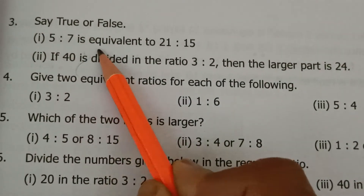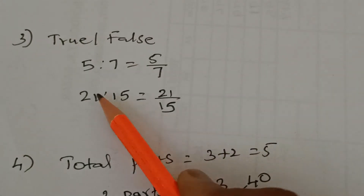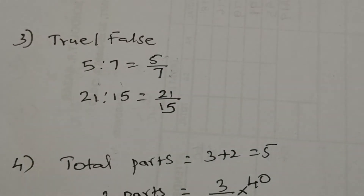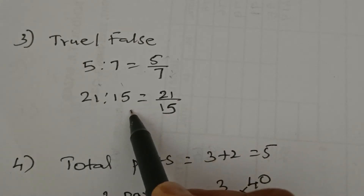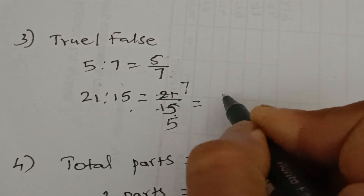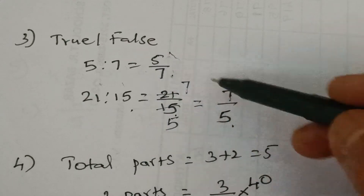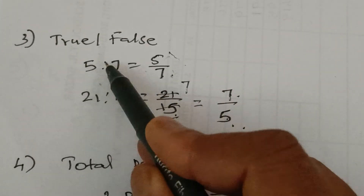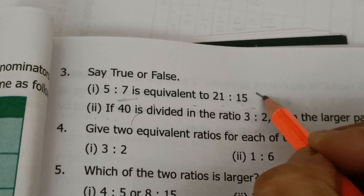Next is true or false: 5 is to 7 is equivalent to 21 is to 15. Let us check whether these two ratios are equivalent. Write 5 is to 7 as 5 by 7. Check if you can simplify — 5 and 7 don't have a common factor, so it is in simplest form. Now 21 is to 15: written as 21 by 15. Both 21 and 15 come in the 3 times table, so cancel by 3. 3 sevens are 21 and 3 fives are 15, giving us 7 by 5. Now check: are 5 by 7 and 7 by 5 equal? No — they are reciprocals of each other, not equal. So this statement is false.